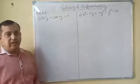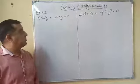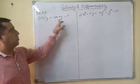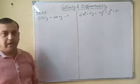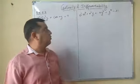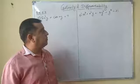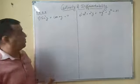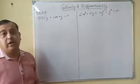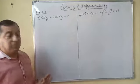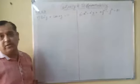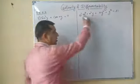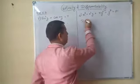Let's continue with the next questions. Question number 7: sin²y + cos(xy) = π. Question number 6: x³ + x²y + xy² + y³ = 81. These are implicit functions — you cannot express y in terms of x explicitly. Now let's start differentiating with respect to x.